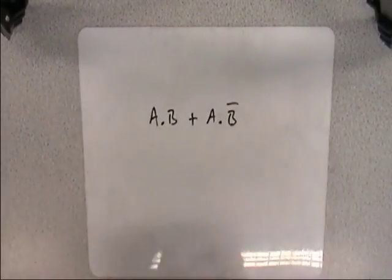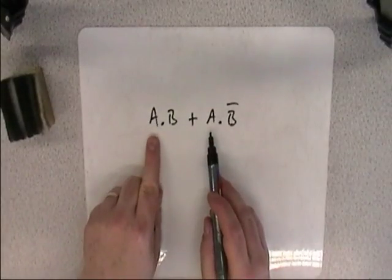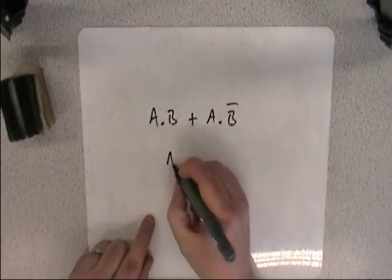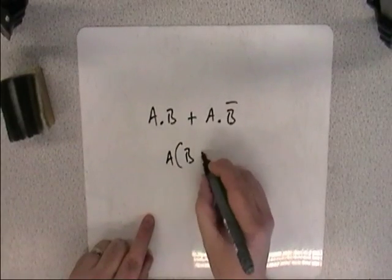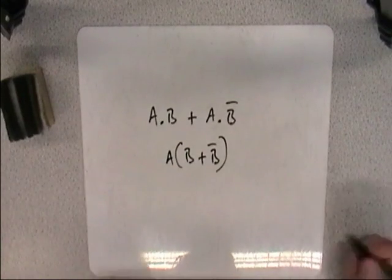You can also do it mathematically. Now, if I was to give you a math problem like this, you would probably see that A is a common factor. So we can factorise, which is A and B or NOT B. Dead easy.